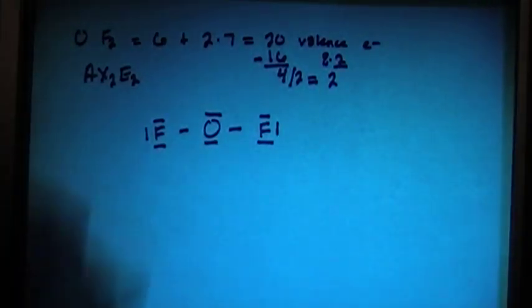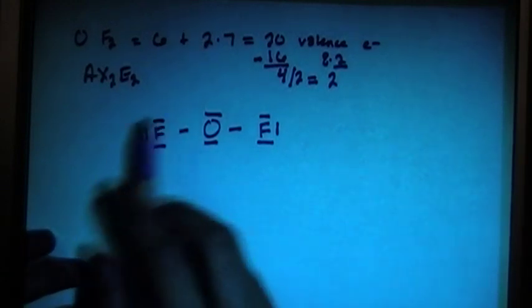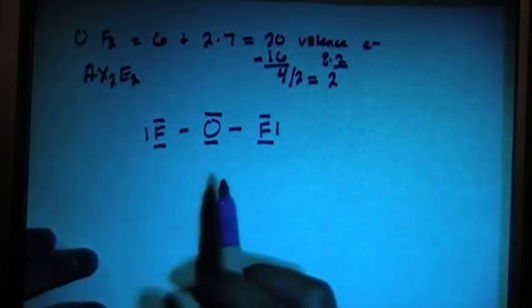Just as long as they're all there. And so it looks like everything has the octet. There's 8 electrons on each atom. So that looks to be good.